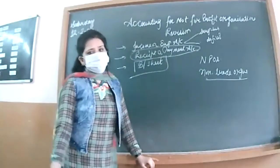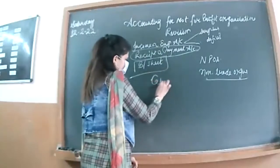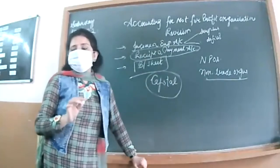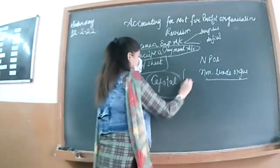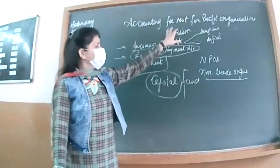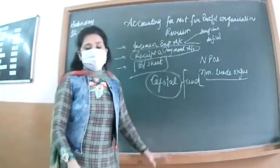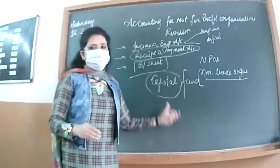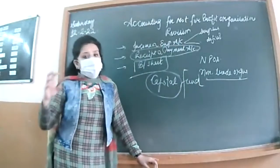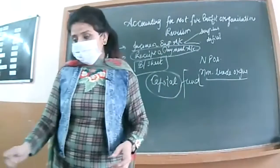The balance sheet is the same as in partnership — same as sole proprietorship. One important thing to remember in this chapter: in partnership and sole proprietorship, capital is called capital, but in NPOs, capital is named 'capital fund.' It is called capital fund because it is a pooling of money — there will be many volunteer members and they bring their money to run the organization. Since capital is not contributed by a single person but by all members, we call it capital fund.